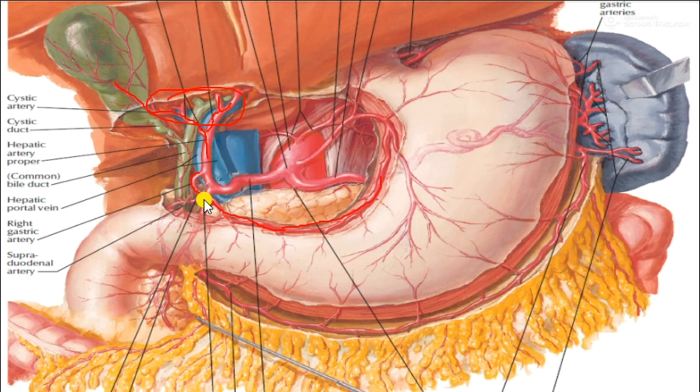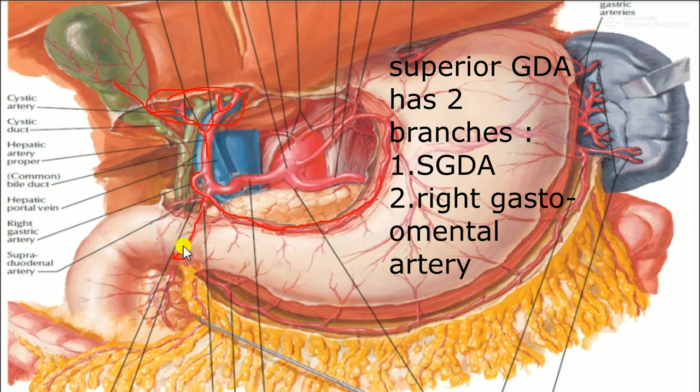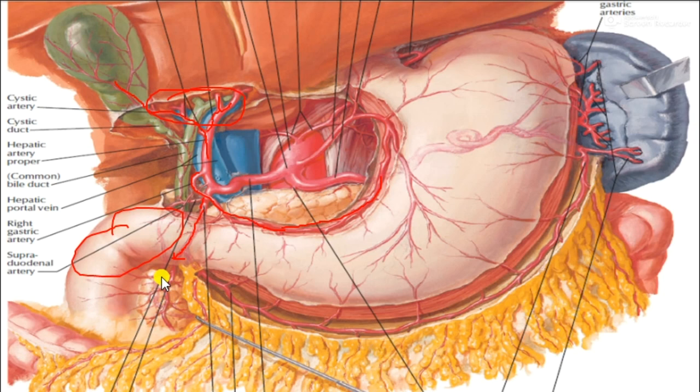The gastroduodenal artery contains two branches: the superior pancreaticoduodenal artery, which has anterior and posterior divisions. These supply the duodenum and the head of the pancreas.